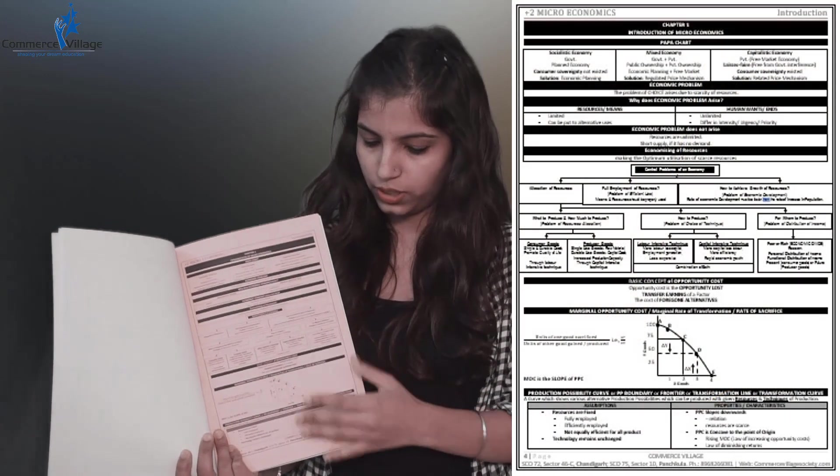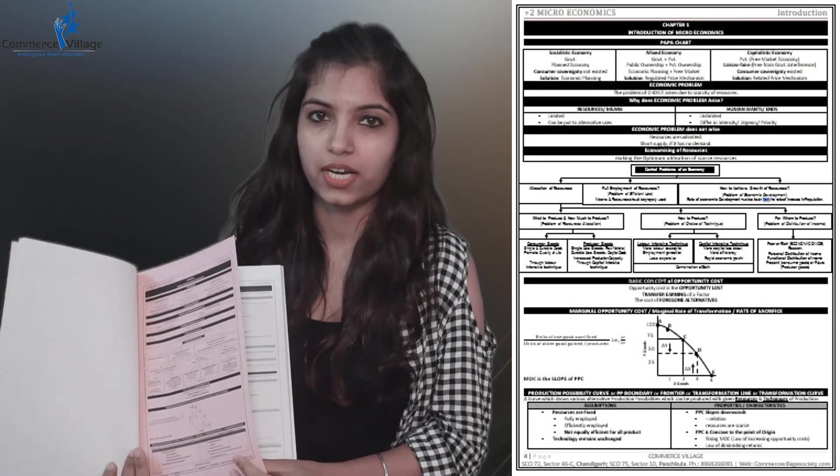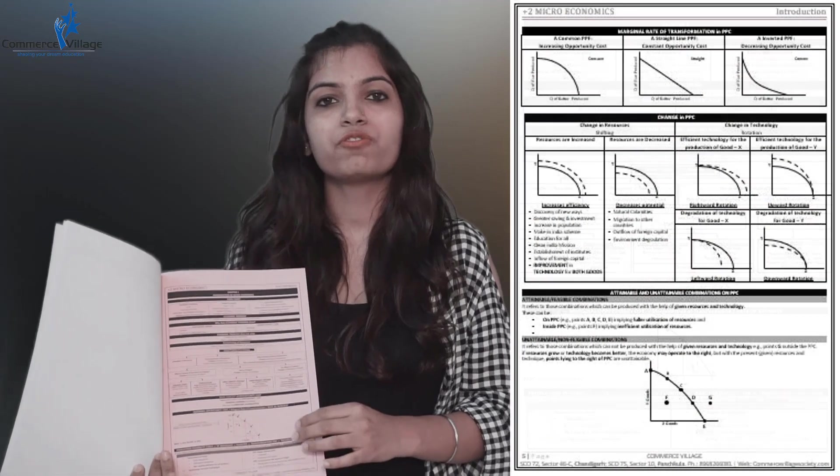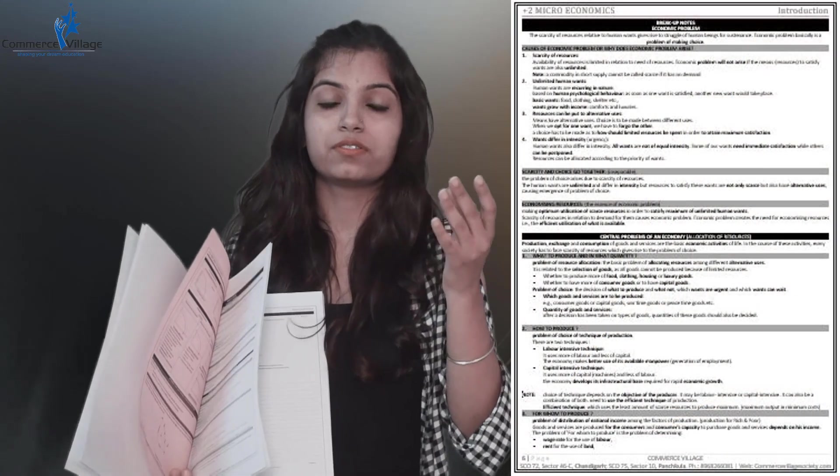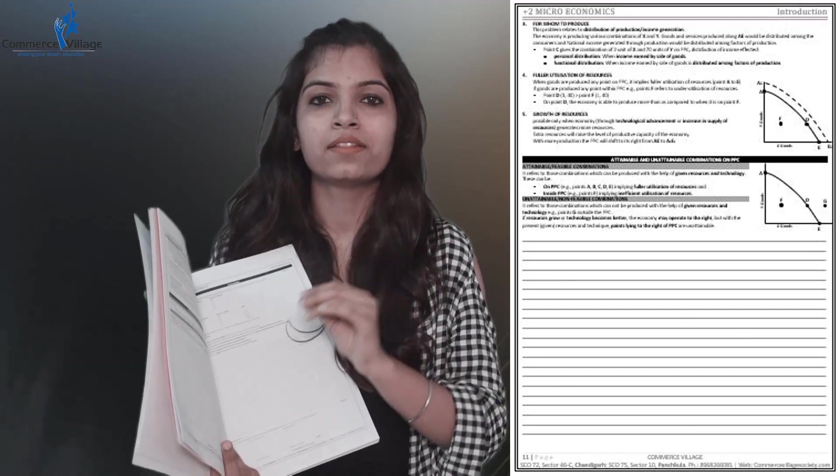First of all, the chapter is done through a page called 'Papachat.' Papachat means the chapter is covered on a single page first. Then the chapter is done through breakup notes. So the second time you do the chapter is with breakup notes. First it is covered from Papachat, then from breakup notes, and at the third stage you do the question answers — only in the book, only in class.